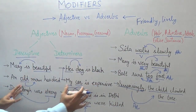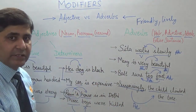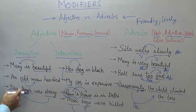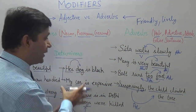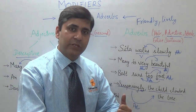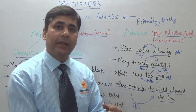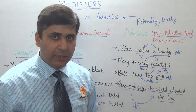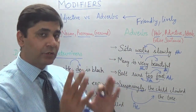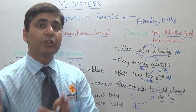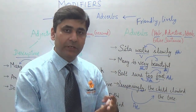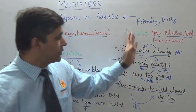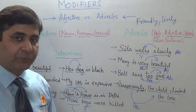So that is the complete concept. We have described two types of adjectives: descriptive adjectives which describe, and determiners which give three types of information — possession, quantity, or identity. On the other side there are adverbs, which modify a verb, an adjective, another adverb, or the whole sentence.